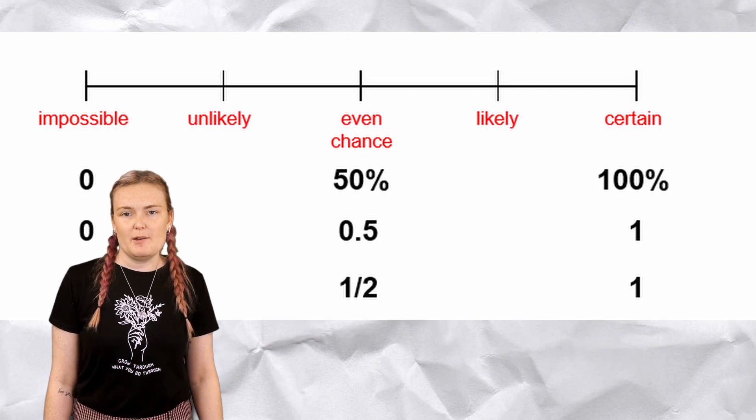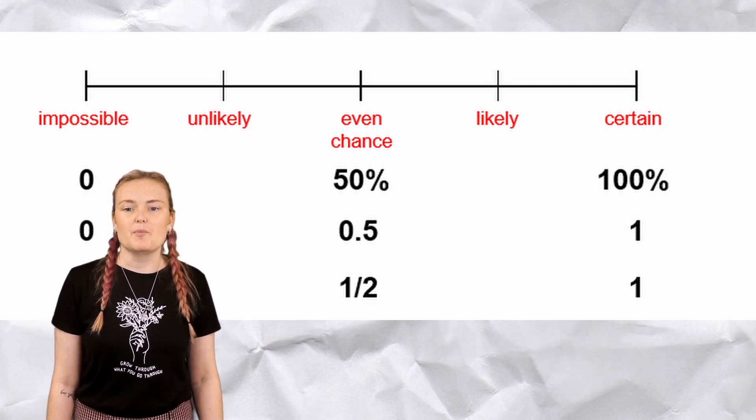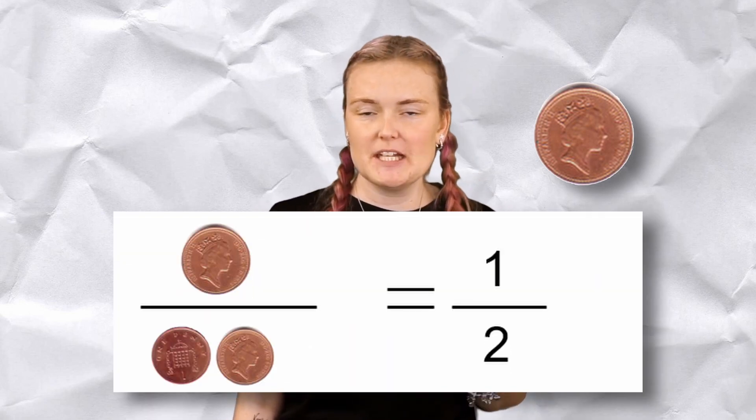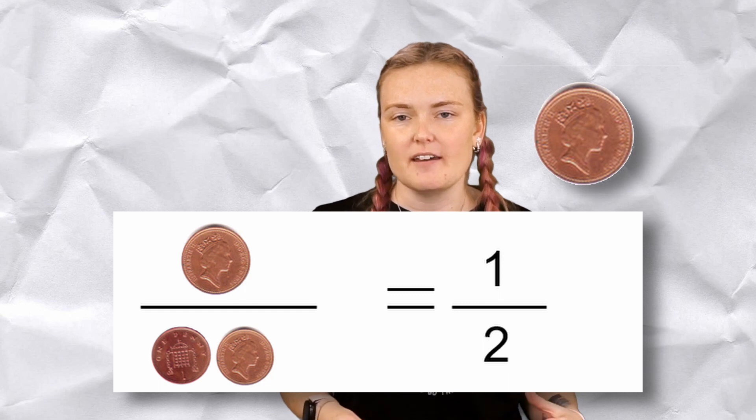Now let's look at how we calculate probability using these numbers. Probability means the likelihood or chance of an event happening. The top of our fraction is the number of ways we can get what we want, and the bottom is the total number of outcomes. For example, flipping a coin — I want to know the probability it lands on heads. There's only one way it can land on heads.